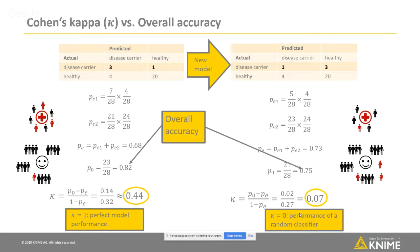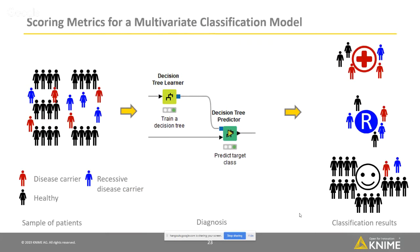Cohen's Kappa concludes the scoring metrics introduced in this webinar. But at the beginning I mentioned that these scoring metrics can also be used for a multinomial classification model with three or more target class values to predict. So here I have a sample of people to classify again, but this time they can be disease carriers, healthy, or recessive disease carriers. I use a machine learning model to make the classification.